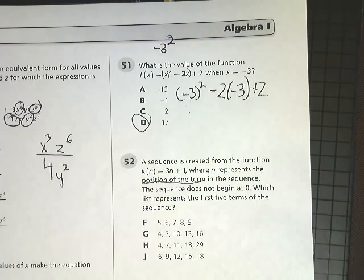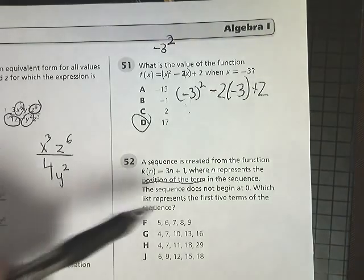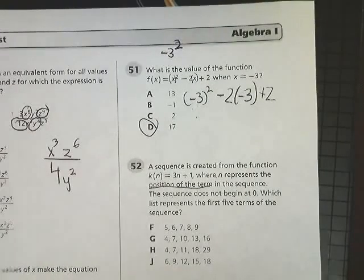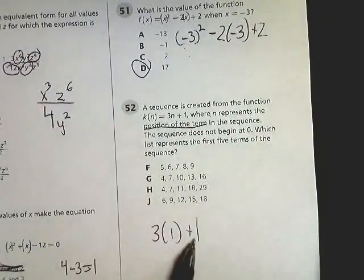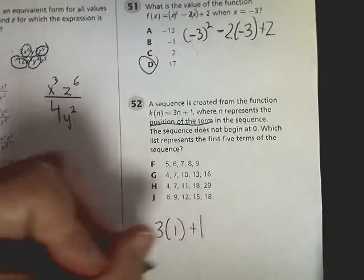Which list represents the first 5 terms of the sequence? Now, don't look for 1 here to start it out. We're going to plug in 1 for n. So all I'm going to do is rewrite this as 3 times 1 plus 1, because this is the first term in sequence.